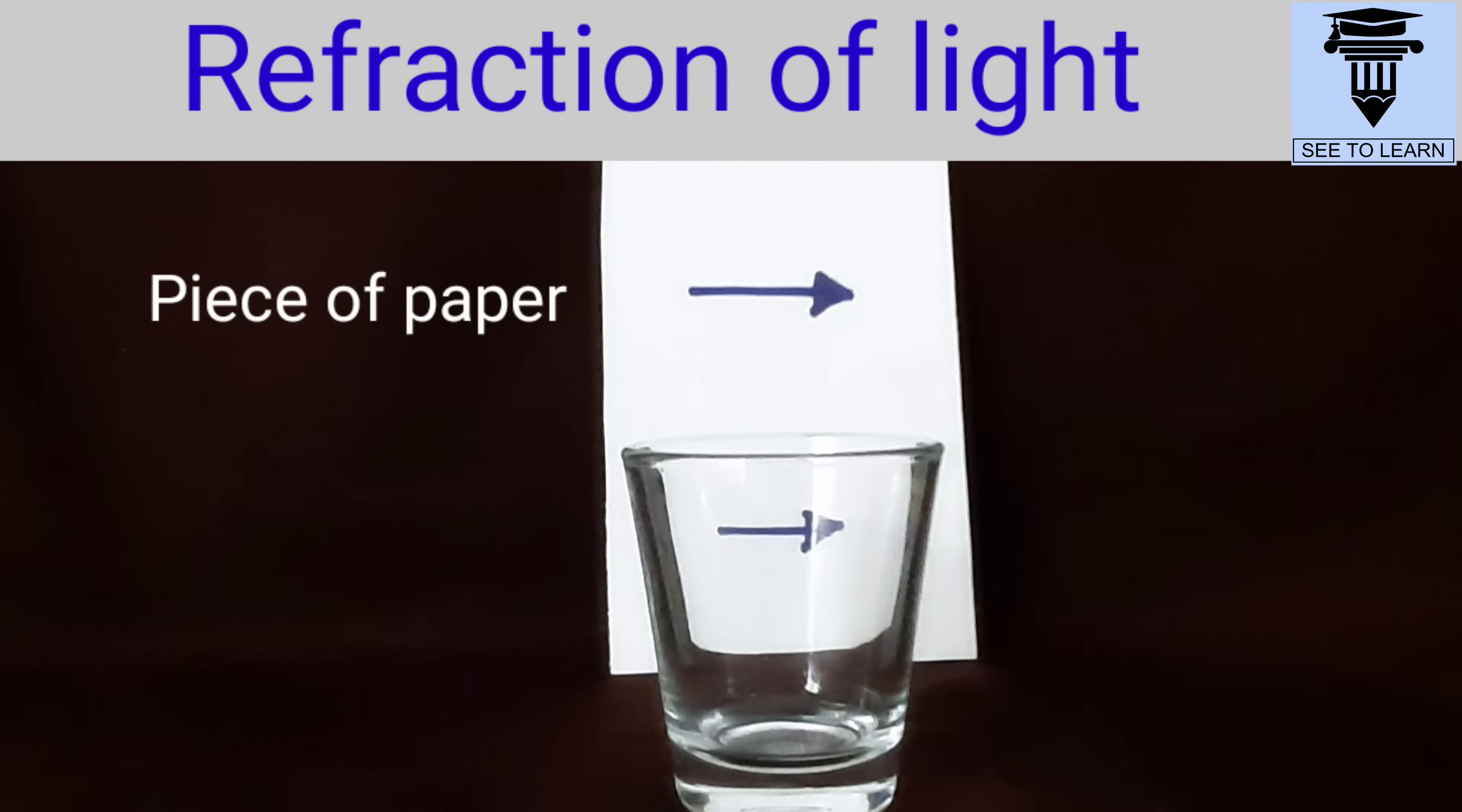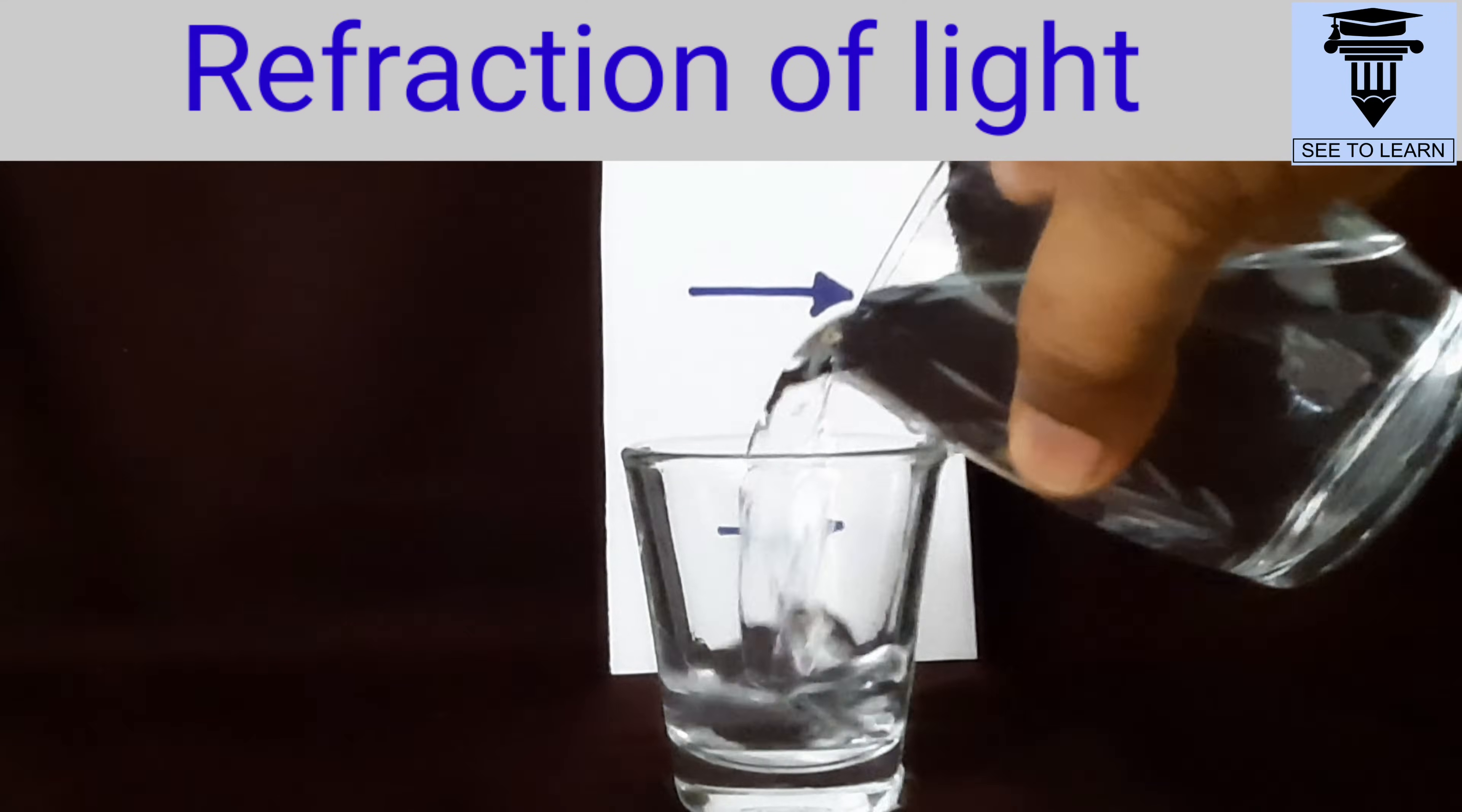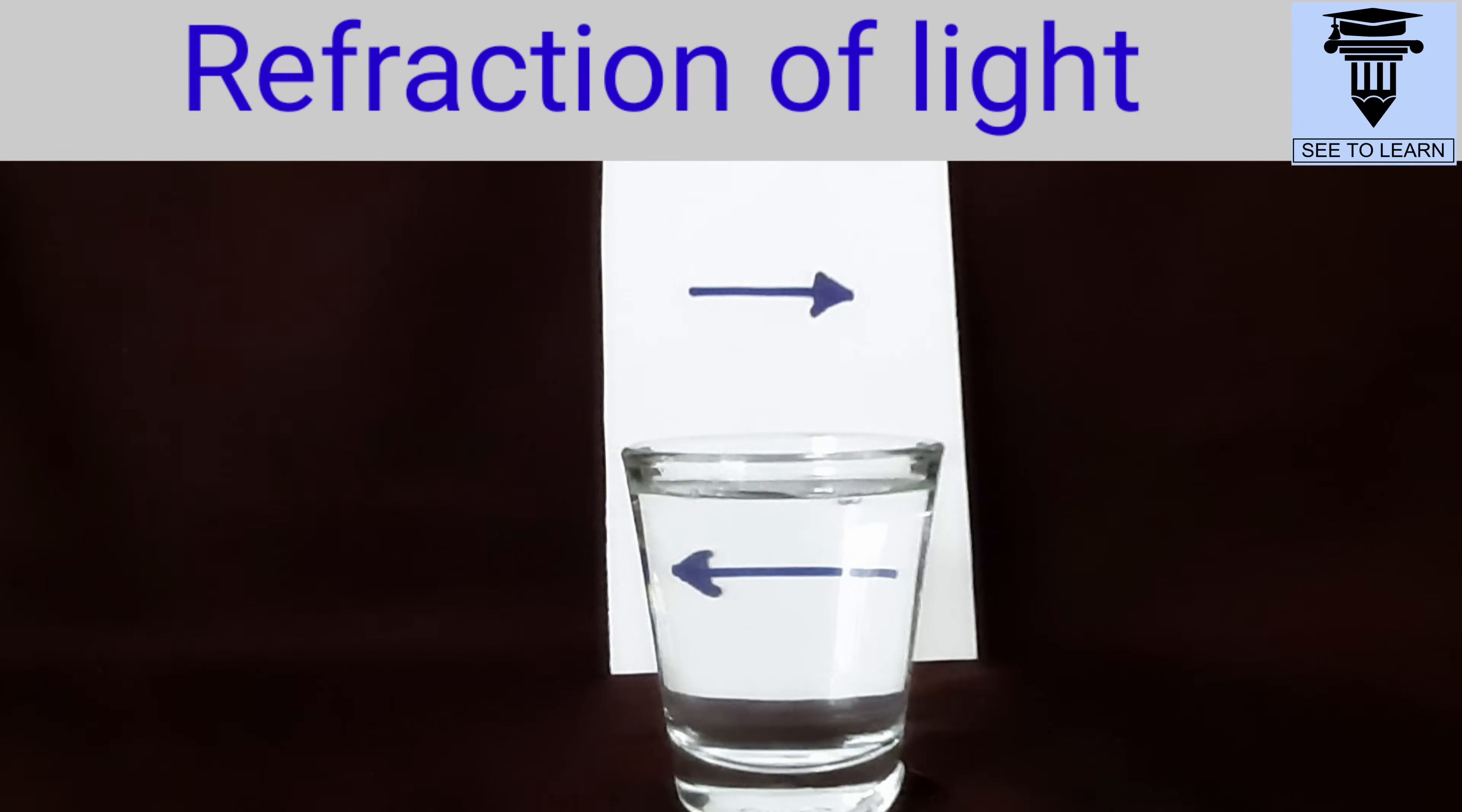A piece of paper on which two arrows are drawn is kept behind a glass. Both the arrows are pointing towards the same direction. Now let's pour some water into the glass.